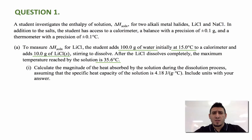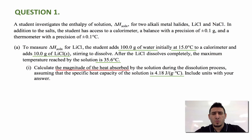The question is: calculate the magnitude of the heat absorbed by the solution, or the heat released by the system, during the dissolution process, assuming that the specific heat capacity of the solution is 4.18 joules per gram degree Celsius. Include units with your answer. The heat absorbed by the solution, or the heat released by the system, can be calculated by q equals m times c times delta T.